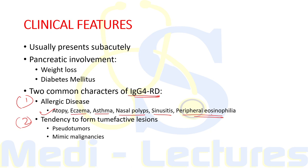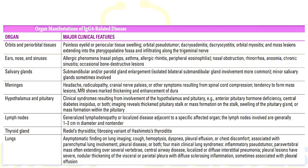Among allergic disease, atopy, eczema, asthma, nasal polyps, sinusitis, and peripheral eosinophilia are very common. The tumefactive lesions are considered pseudotumors — not actual malignancies, but they can mimic malignancies. This is the reason many patients are often misdiagnosed and even undergo surgeries like modified Whipple's procedure or thyroidectomy for resecting suspected malignancies before the correct diagnosis is made.